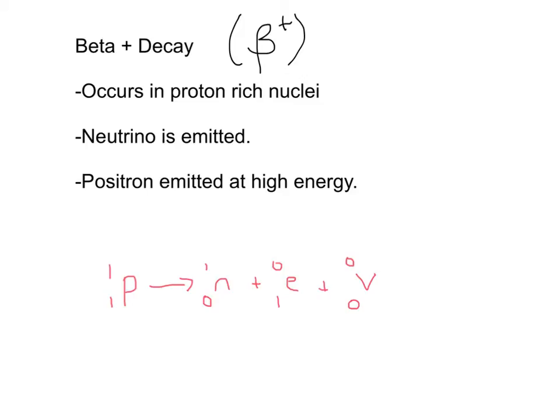An example of a beta plus decay equation: we start with a proton, and it's converted into a neutron, a neutrino on the far right, and in the middle, our positron, which we represent in this format. We're saying it has the equivalent of a plus one atomic number. You might see it written like this - those two things say exactly the same thing. We'll see how we represent an electron in beta minus decay next.